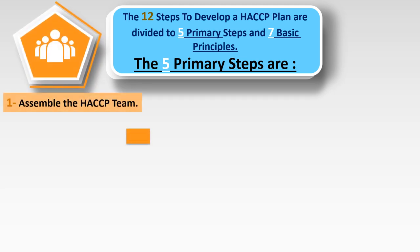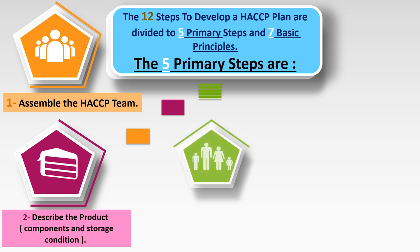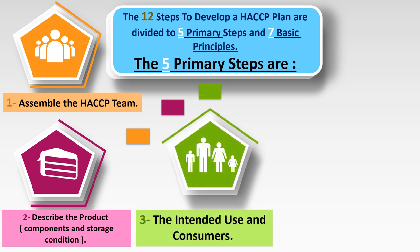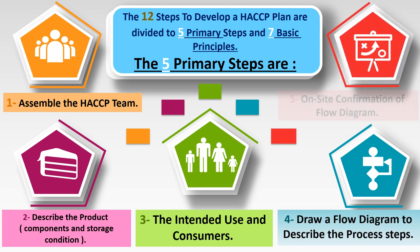The five primary steps are: Step 1 - assemble the HACCP team; Step 2 - describe the product components and storage conditions; Step 3 - identify the intended use and consumers; Step 4 - draw a flow diagram to describe the product process steps; Step 5 - on-site confirmation of this flow diagram.